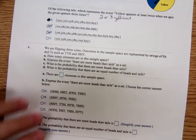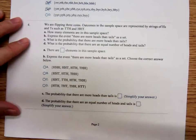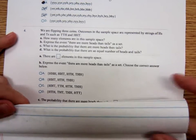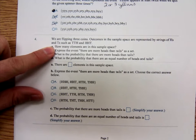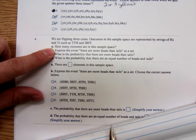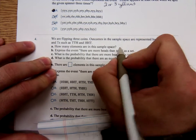Now, number four. We're flipping three coins. Outcomes in the sample space are represented by strings of H's and T's. The sample space is the list of all possible outcomes. How many elements are in the sample space? Well, to calculate that, there's going to be three different coins.